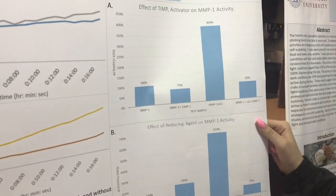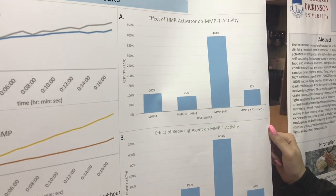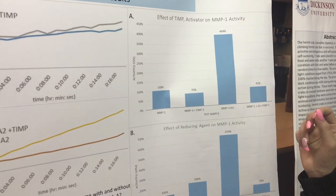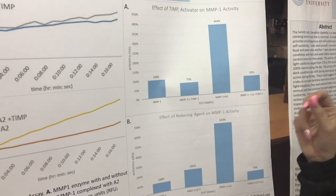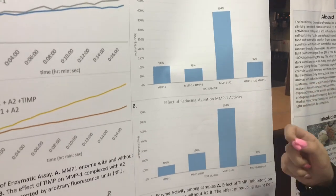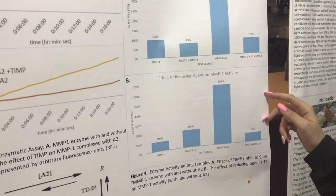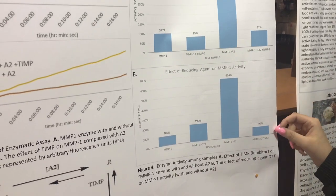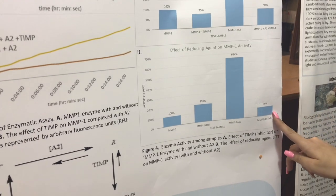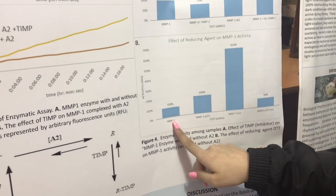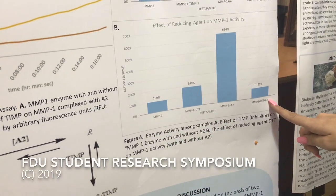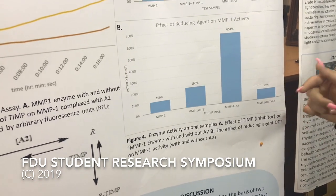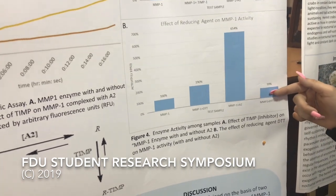The second part of the experiment was to confirm whether the activation site actually binds there. We added DTT, and as you can see, this is the control. When DTT and the activator were present, it did bind at that site. Thank you.